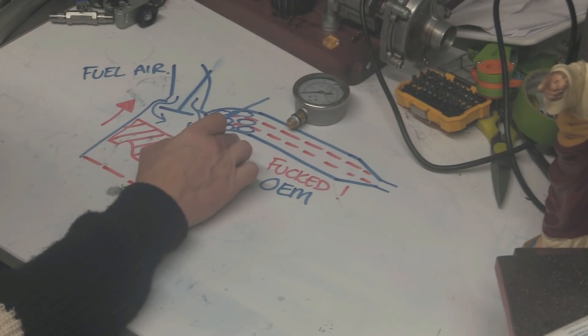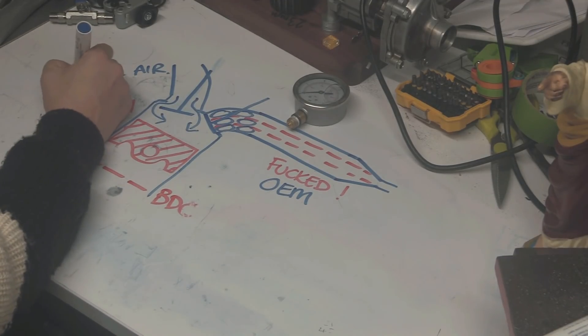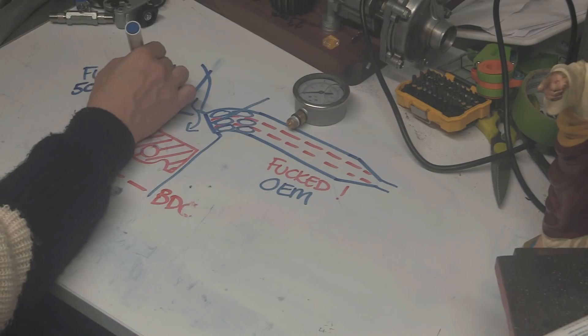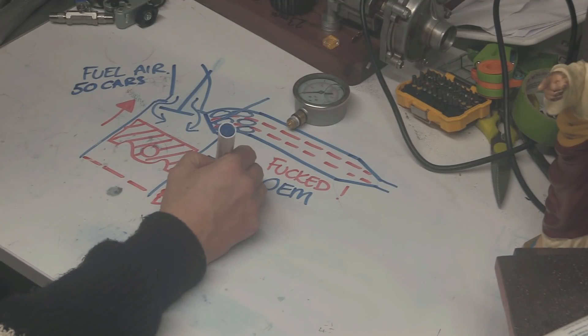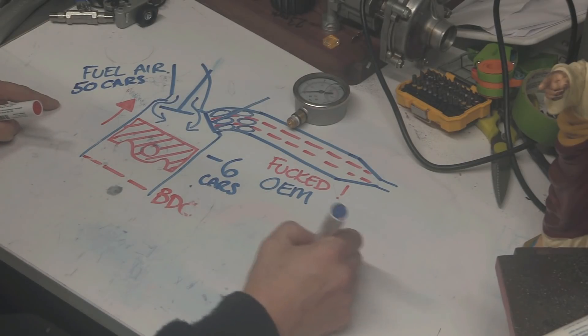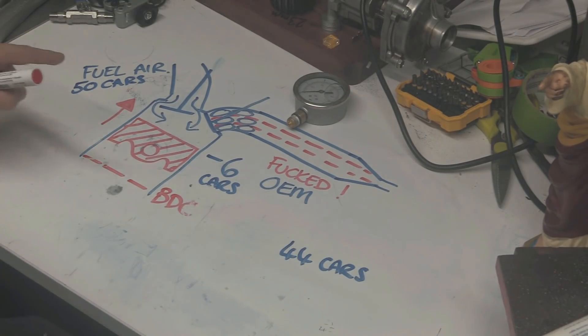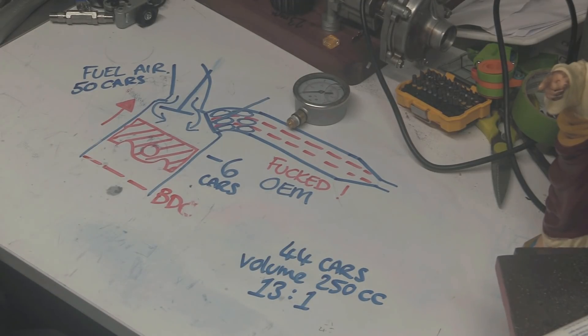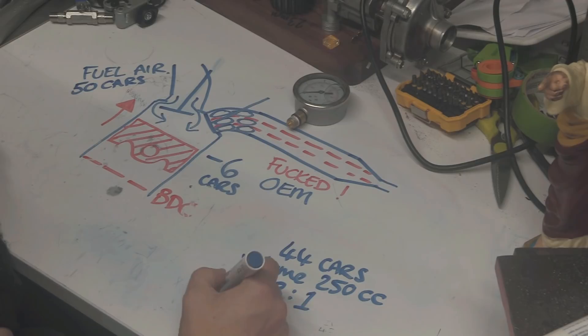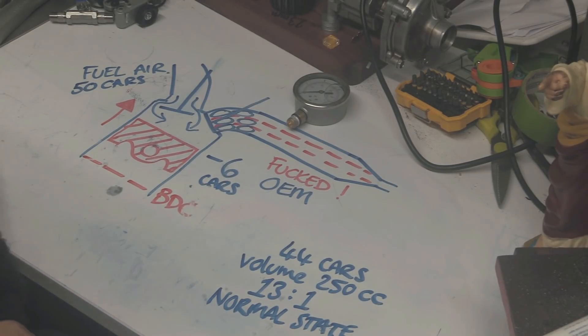So, we're always going to lose this amount of fuel. So, what we do is we put 50 cars worth of fuel in. 50 cars worth of fuel into this cylinder, knowing we are going to lose six cars. So, we've got 44 cars, and 44 cars, with the amount of cylinder volume, so, the volume, and let's just say it's a 250cc cylinder, equals a ratio of 13 to 1. Air fuel mixture ratio. And we're happy with that, we're happy with that, because it's slightly on the rich side, or whatever. This is what we would call, this is the normal state. This is how your bike came from the factory, this is the normal state that this bike should be in.